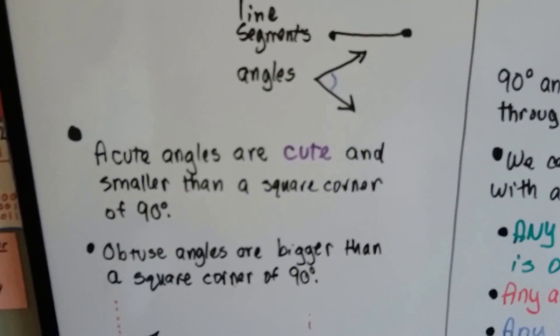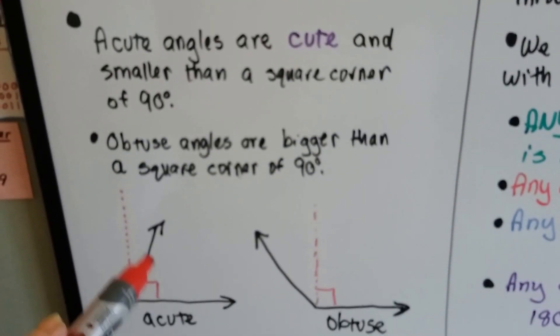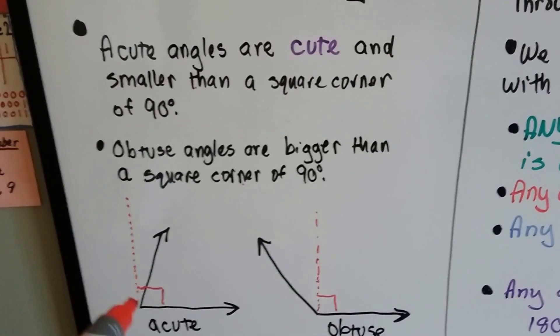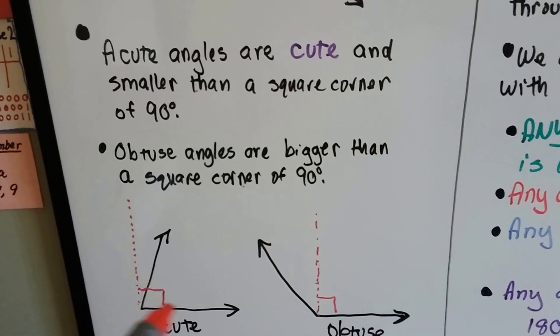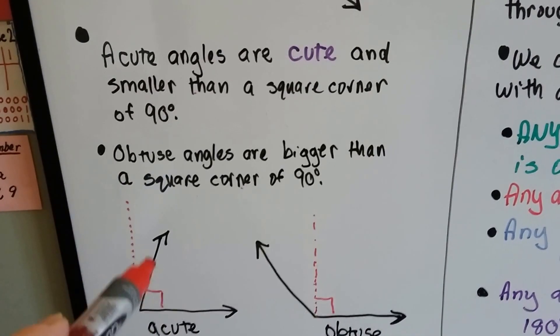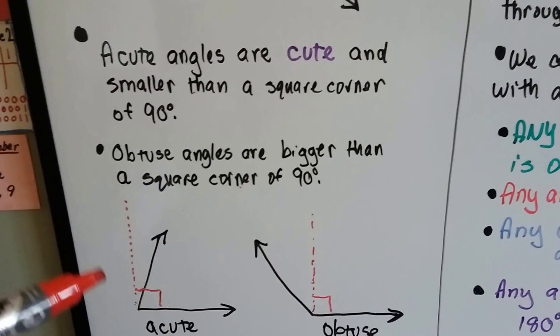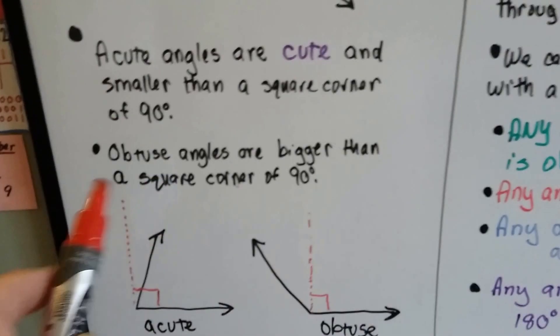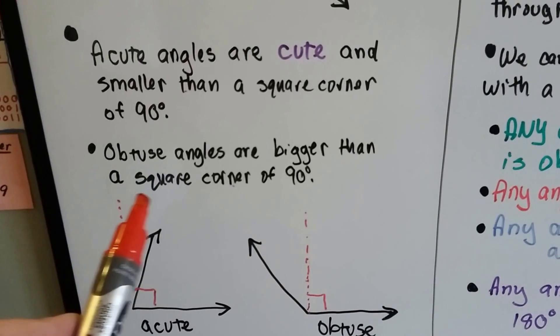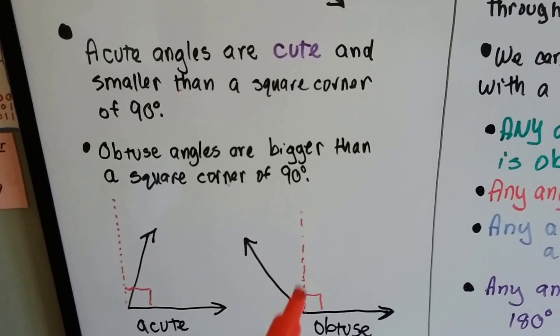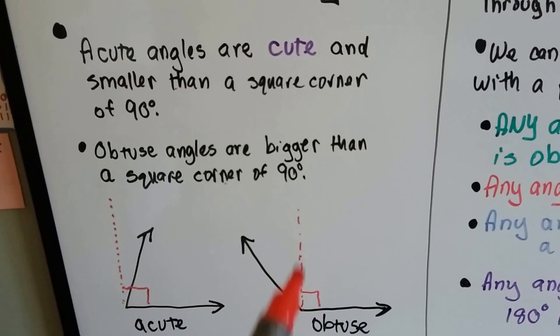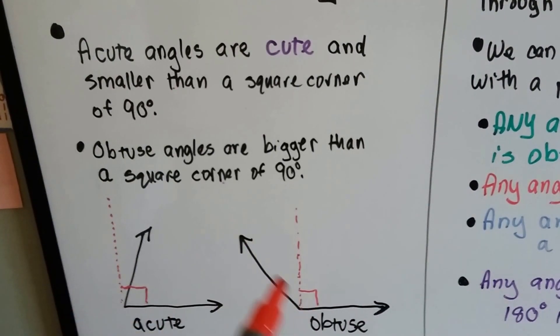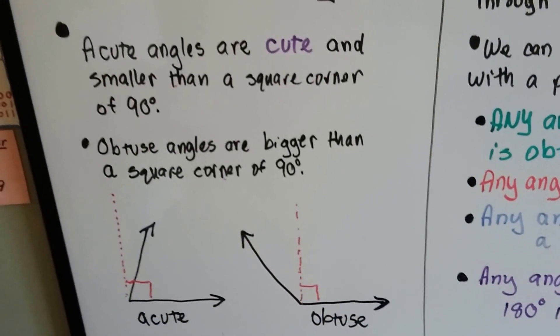Acute angles are cute and smaller than a square corner of 90 degrees, like this. Here's the square corner. If the angle is smaller than the square corner, it's acute, like it's a cute little angle. See? It's smaller. Angles that are bigger than a square corner of 90 degrees are obtuse. If it's bigger than a square corner, if it's open more than a square corner, it's obtuse.